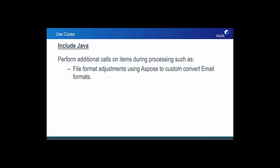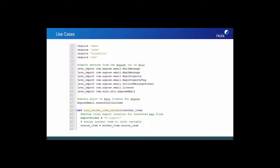In our fourth and final worker-side script example, we will look at how we can perform additional calls on items while the Nuix workers are processing them — this could be very useful with file format adjustments. For example, using our exposed plugins to custom convert email formats. The ability to tap into the patented Nuix engine early in your workflow and not only process data but convert and export them to disk in one step could be very useful. In this final example code, we first load the data classes needed to perform date checks in Java and then import methods from the exposed jar that come prepackaged in Nuix. Next, we set the opening worker item callback and define a folder on the file system where we want to export any responsive items as Outlook MSG files.